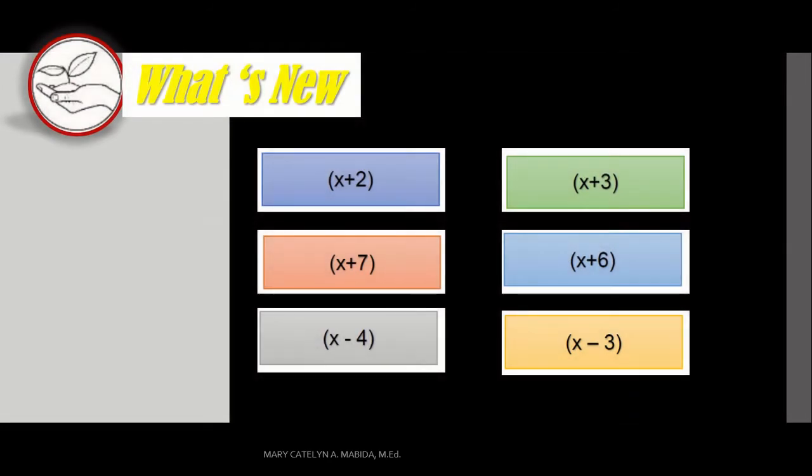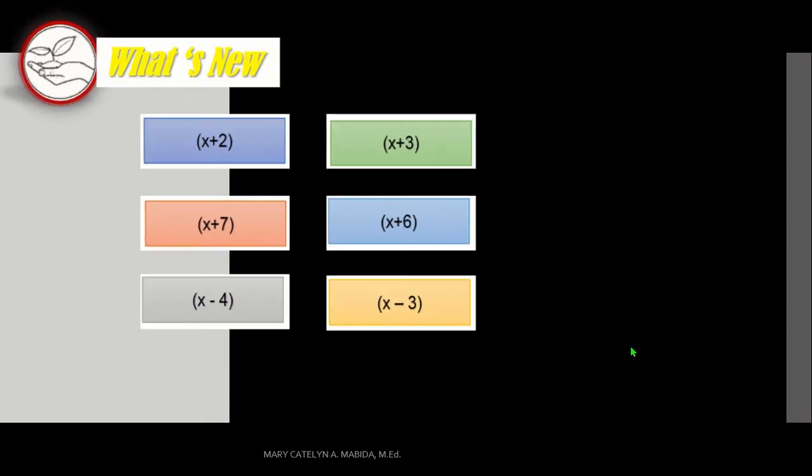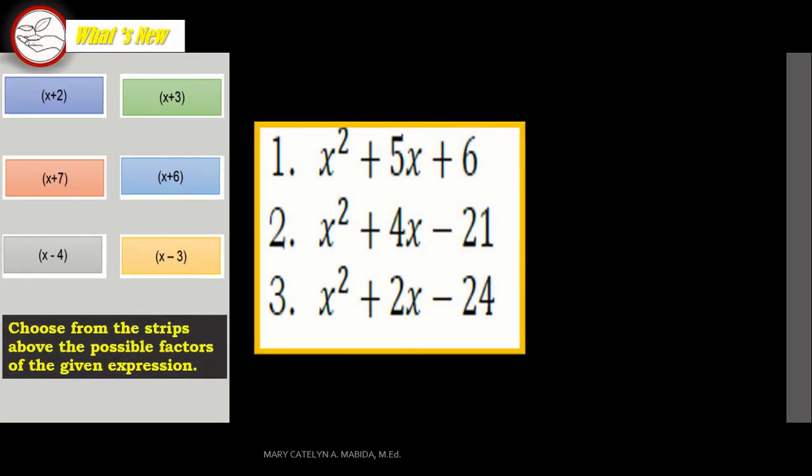Now what's new? Please get your pen and paper. In 3, 2, 1. Here we go. We have some factors here: X plus 2, X plus 7, X minus 4, X plus 3, X plus 6, X minus 3. Now, choose from the strips above the possible factors of the given expressions.